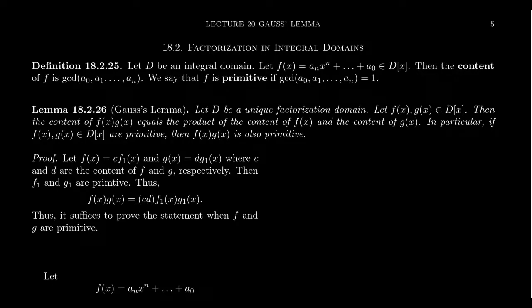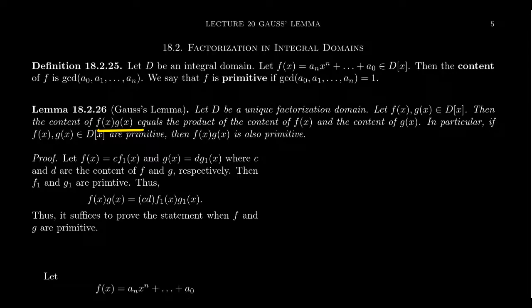Suppose that D is a unique factorization domain — in particular, GCDs always exist and every polynomial has a well-defined content. Take two polynomials f and g that belong to the ring D[x]. Then the content of their product, the content of f times g, is going to equal the content of f times the content of g. So over a UFD, this content function is multiplicative: the content of the product is the product of the contents.